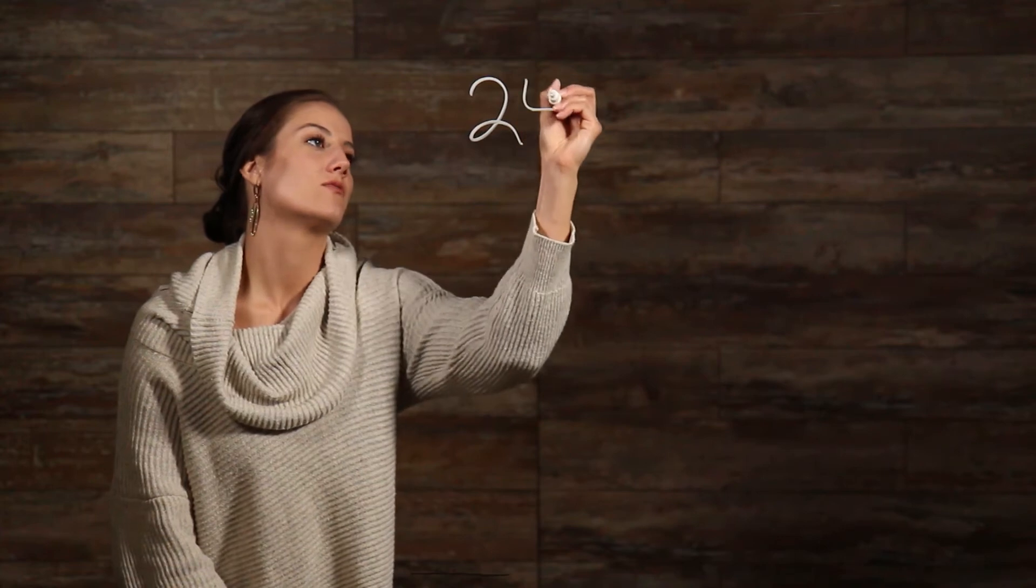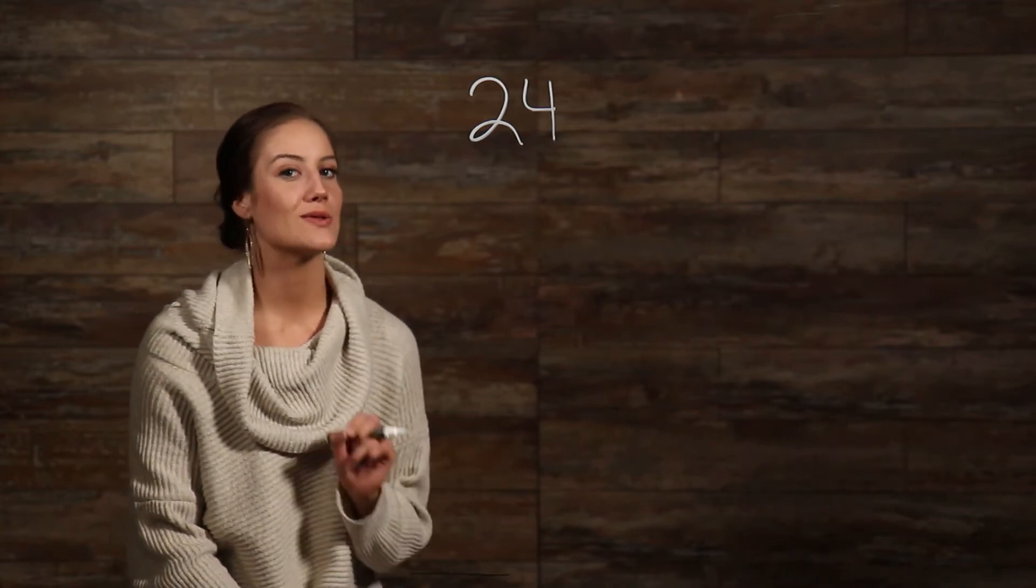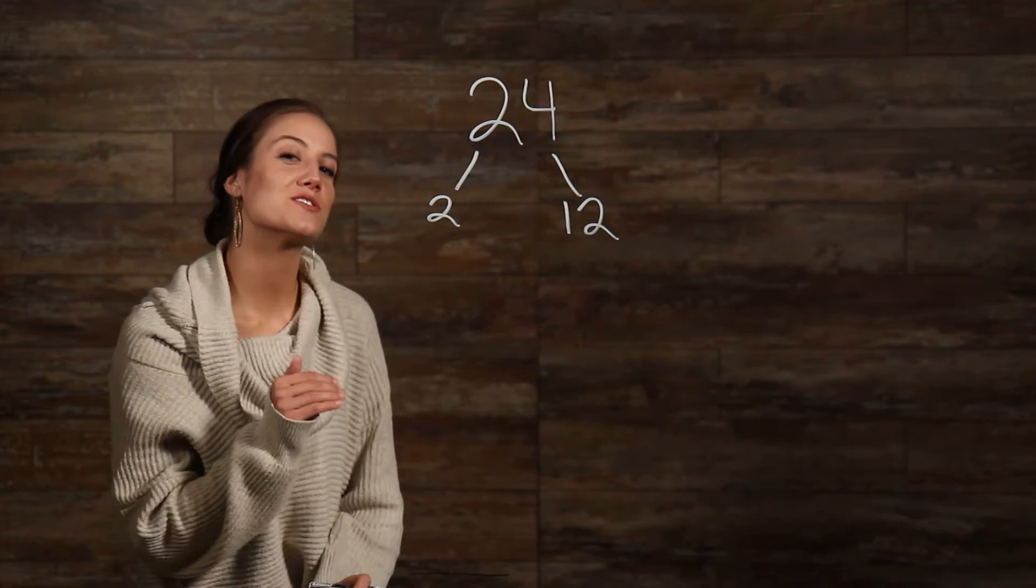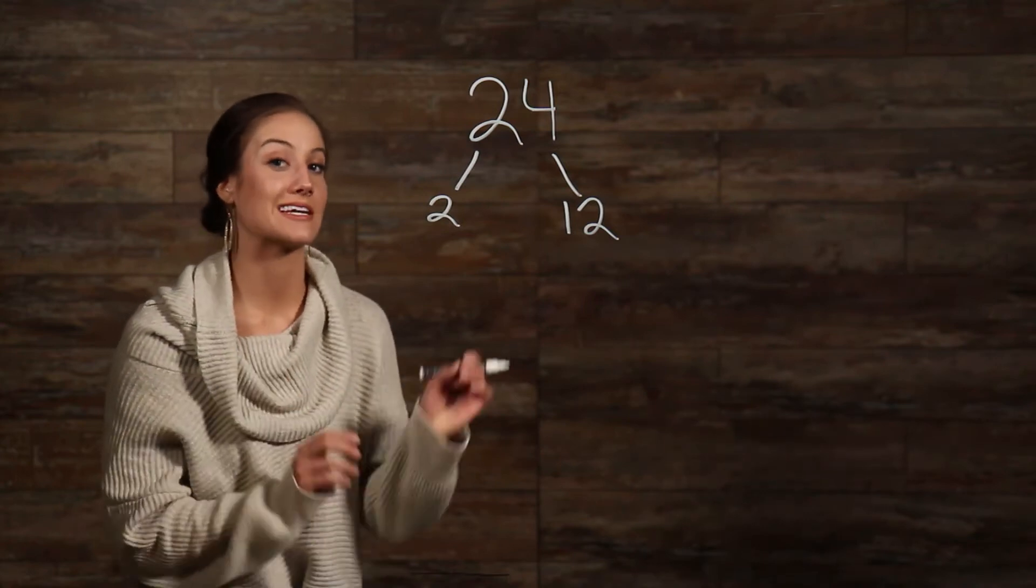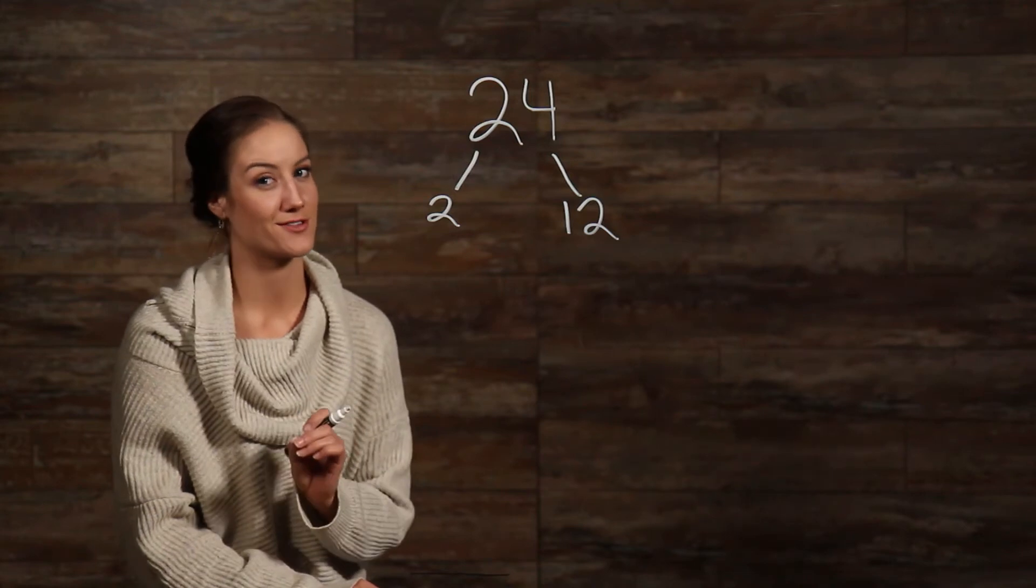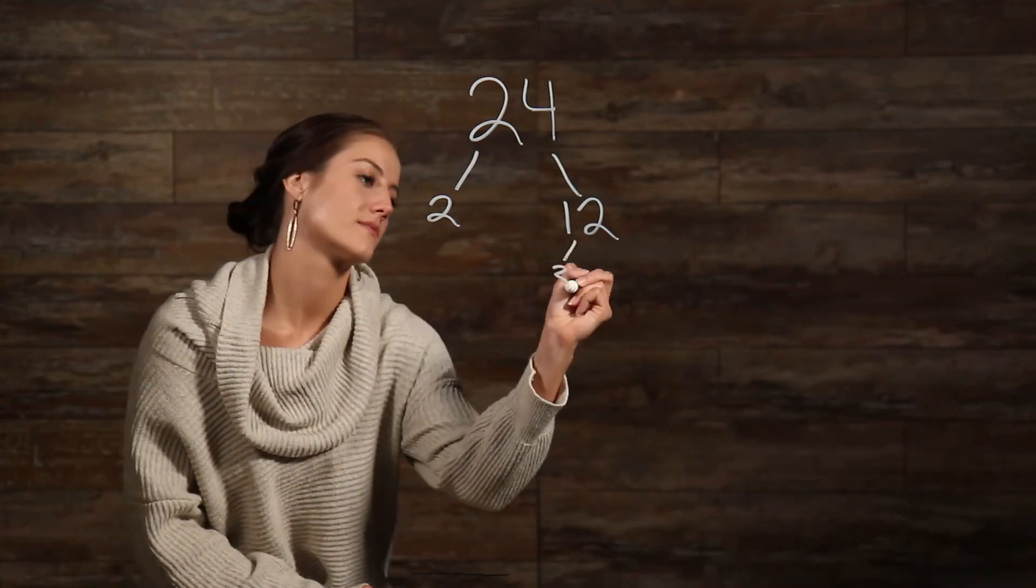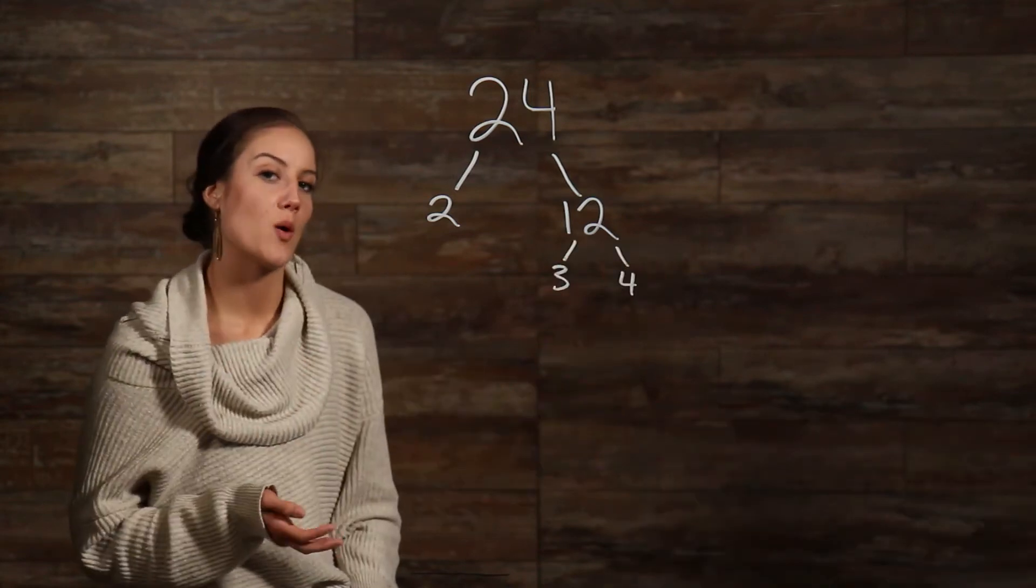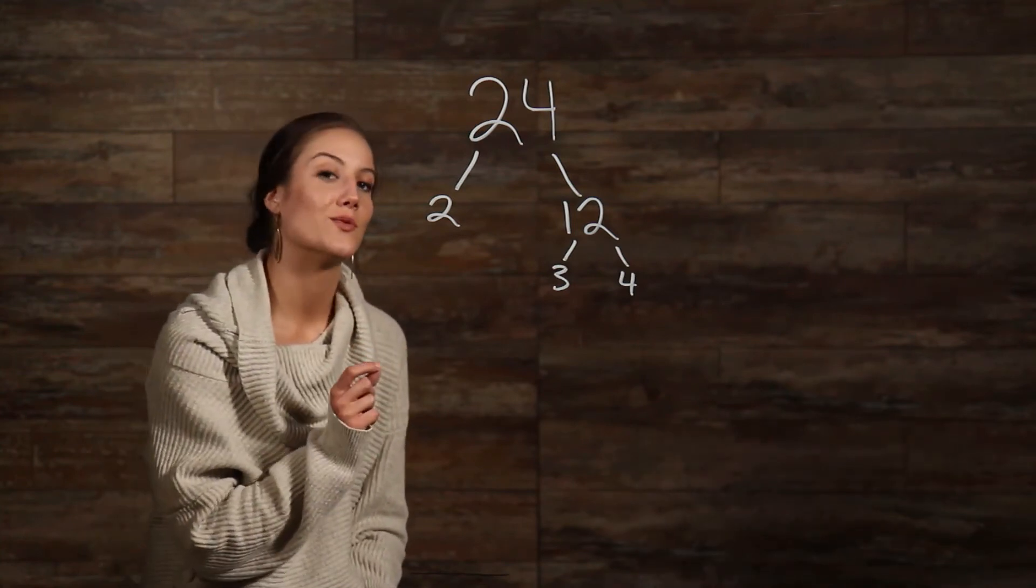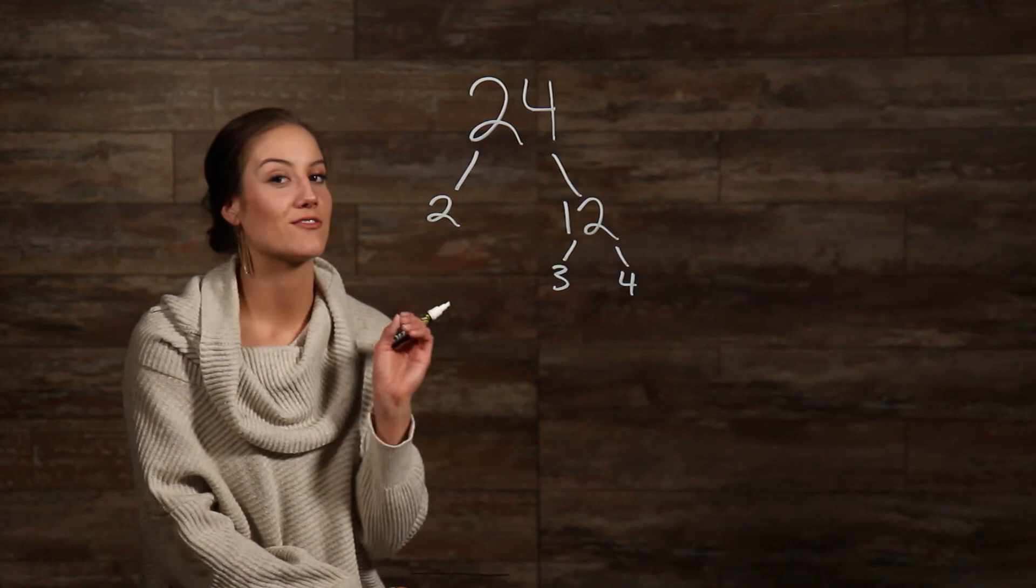What are the prime factors of 24? The easiest way to start is by starting with the smallest prime number, which will always be 2. So, let's see if that works. 2 divides evenly into 24 to get 12, but 12 is not a prime number, so we must go even further. Let's try 3. 3 worked as well, but our result still isn't a prime number. When we divide 3 into 12, we get 4, so we must go even further.